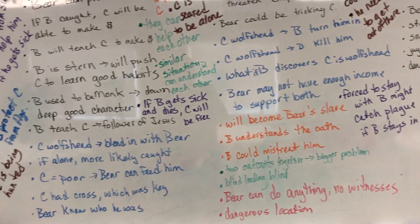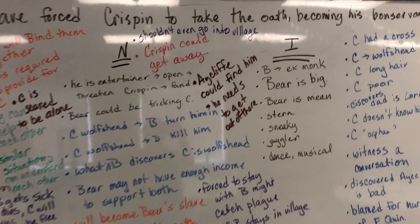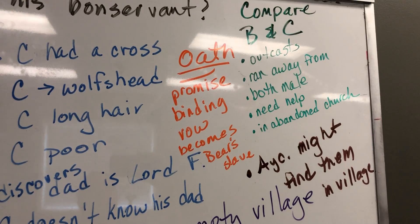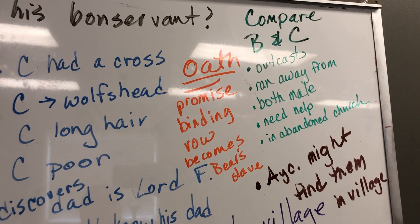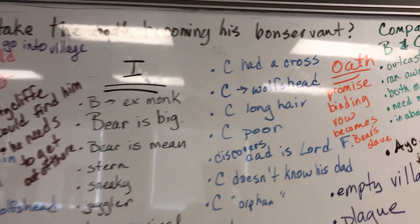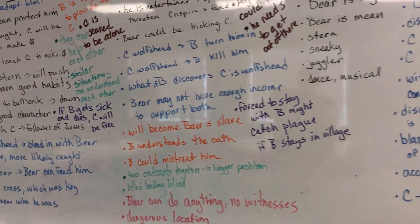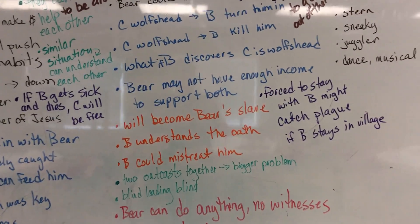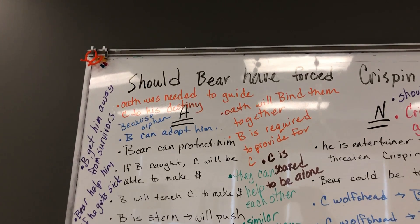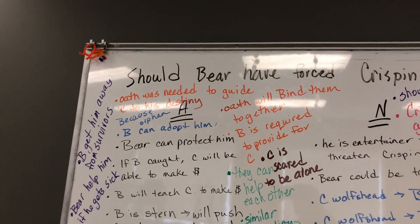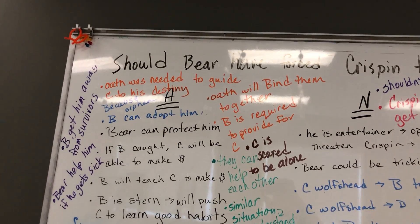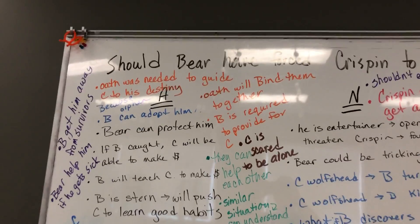Then we decided we would define what an oath is, so I used orange for that. We threw some brainstorm ideas up here about what it would mean to take the oath — what does that really mean? Then I used my orange marker and we came up with some of our negative reasons and some of our affirmative reasons about why that information would help us decide: should Bear force Crispin to take the oath?